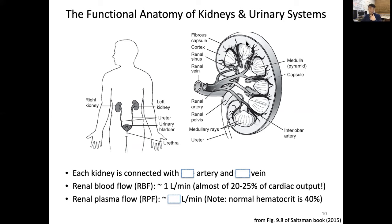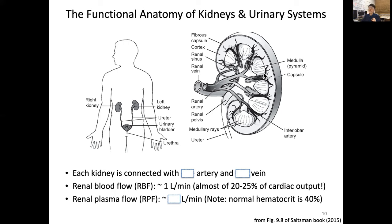Let's review the kidney anatomy. The outside has a strong fibrous capsule, likely made of collagen fiber. The outer part of the kidney is called the cortex — similar to the brain, which also has an outer cortex. The inner part has an interesting pyramidal shape, called the medulla. Inside, there is the renal sinus, and the renal vein and artery provide blood into and out of the kidney.